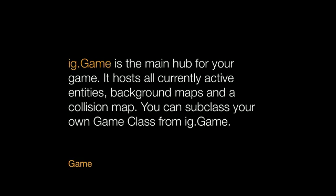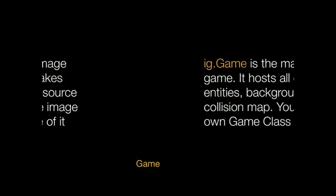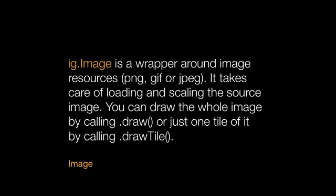There is a font class that loads a specially formatted font image and allows you to draw text with it — all fonts in Impact are pixel fonts. The ig.game class is the main hub for your game, hosting all current active entities, background maps, and collision maps; you can subclass it to add custom functionality. There is an image class, which is a wrapper around an image resource such as a PNG, GIF, or JPEG — it handles loading and scaling the source image, and you can draw the whole image with draw or just one tile with drawTile, defining the tile size as well.